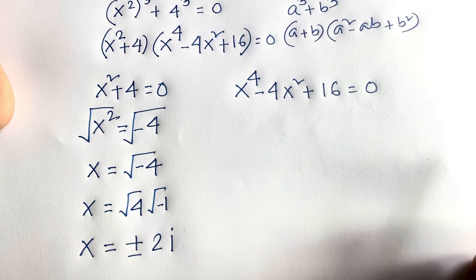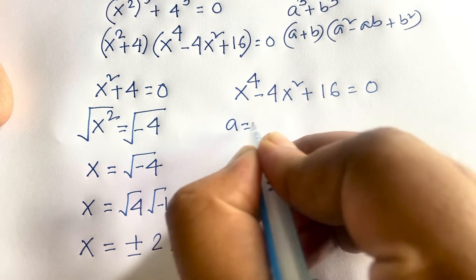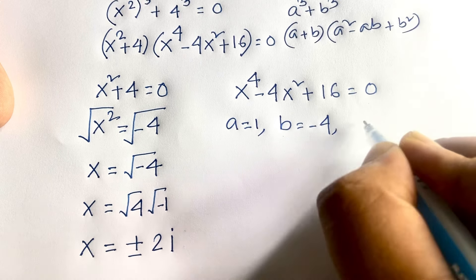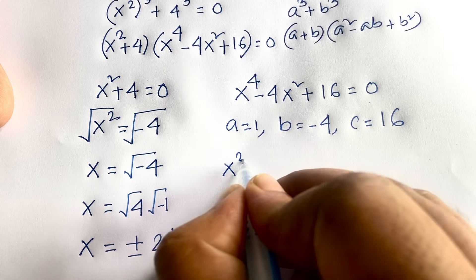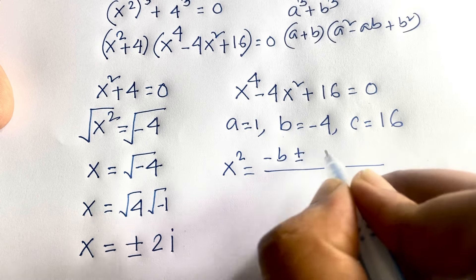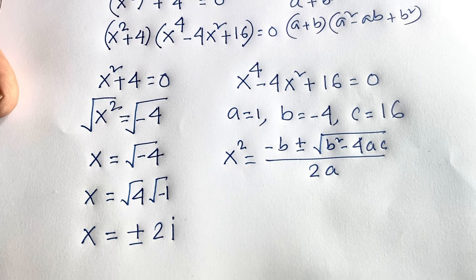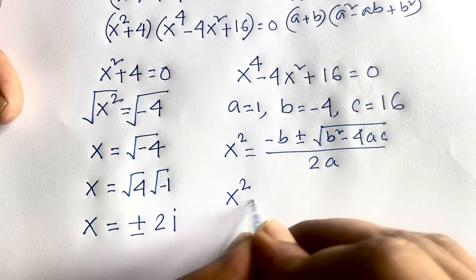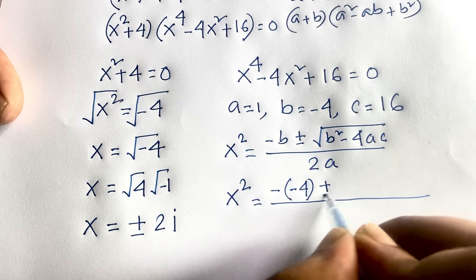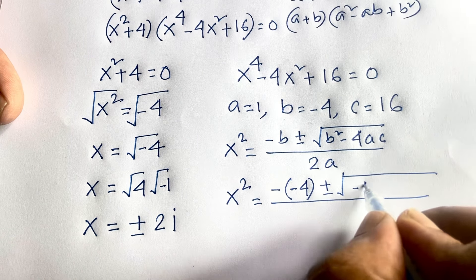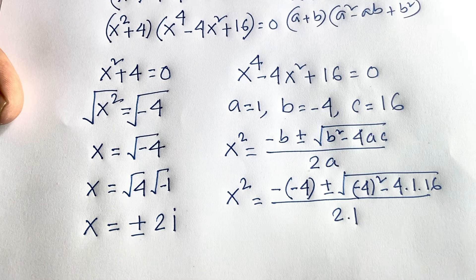Now for x to the power 4 minus 4x squared plus 16 equals 0, we treat x squared as the variable and apply the quadratic formula. Here a equals 1, b equals minus 4, and c equals 16. So x squared equals minus b plus or minus square root of b squared minus 4ac, all over 2a.